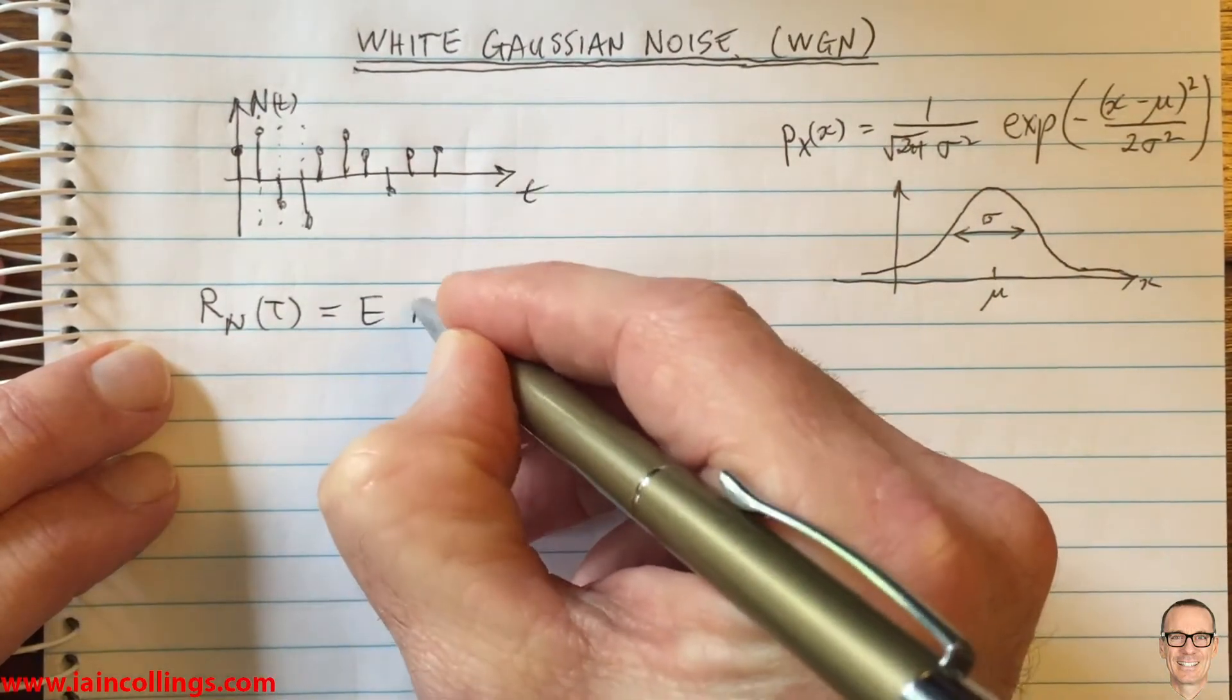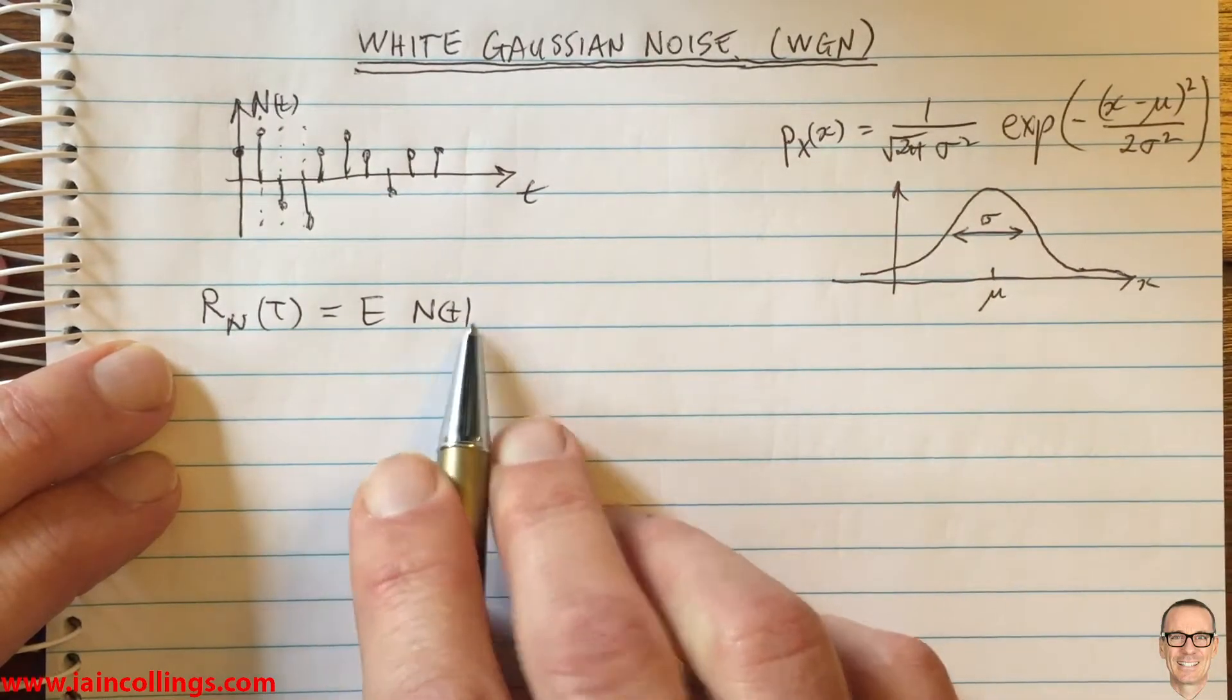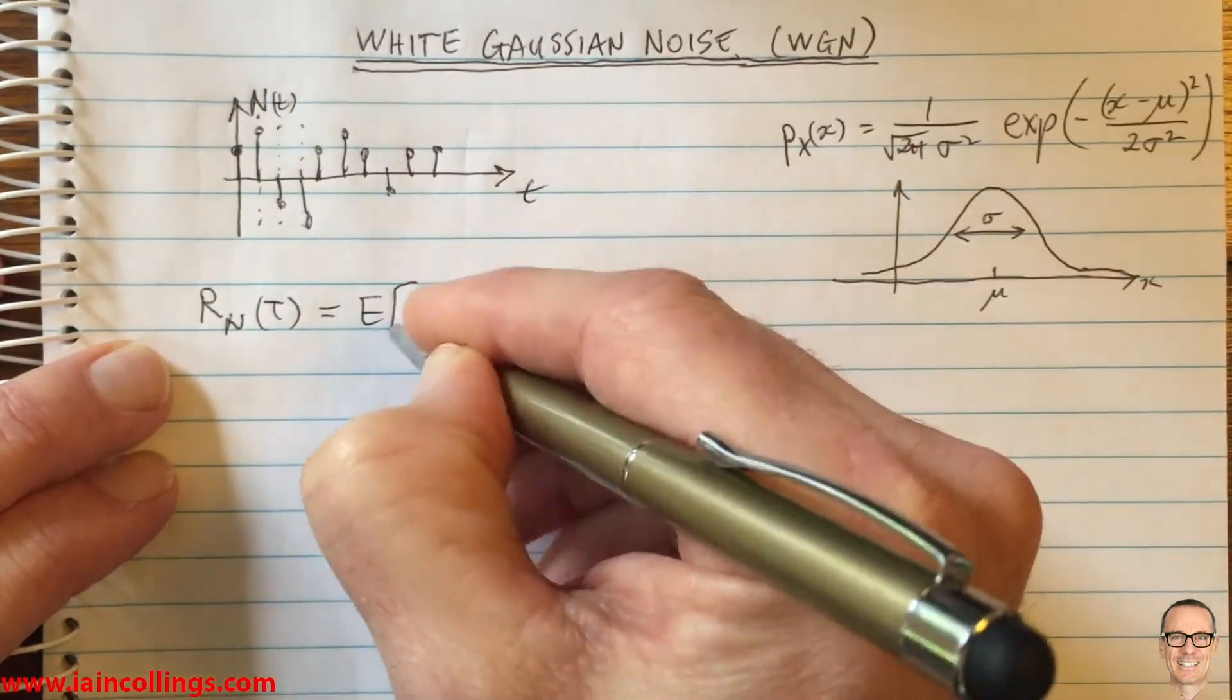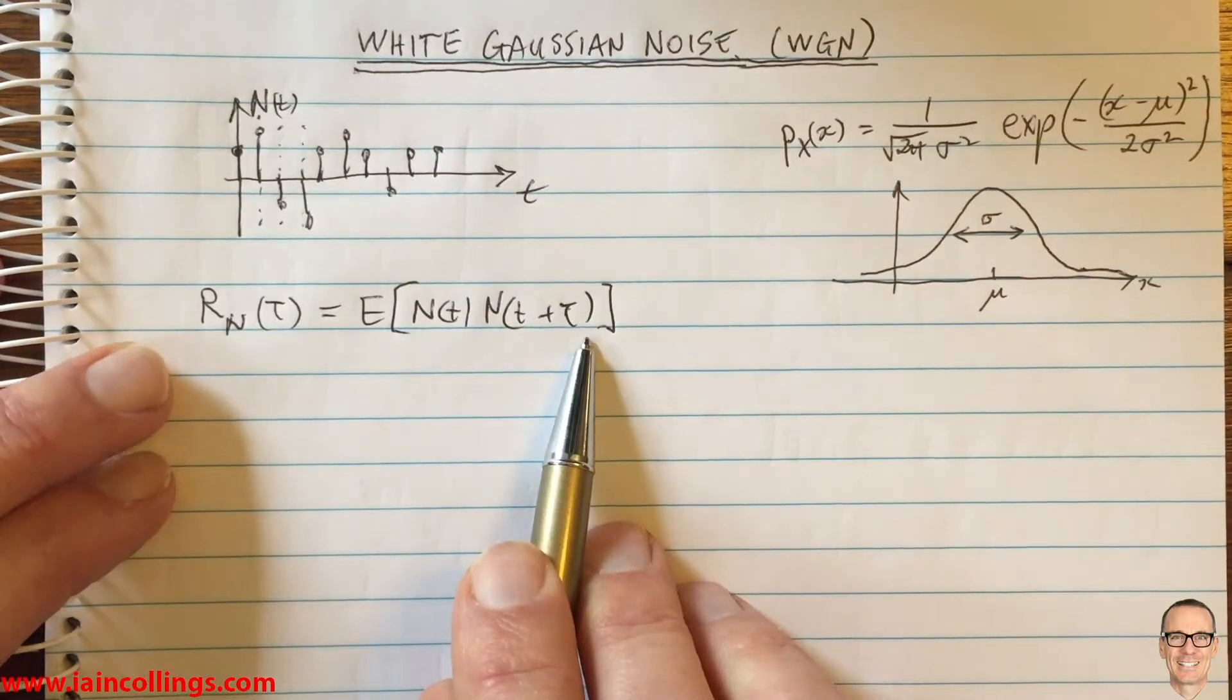This equals, by definition, the expected value of the random variable at that time multiplied by the random variable at a delayed time, or a time in the future plus tau. This is the autocorrelation function.